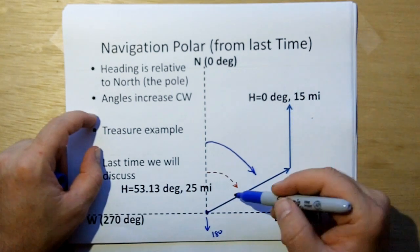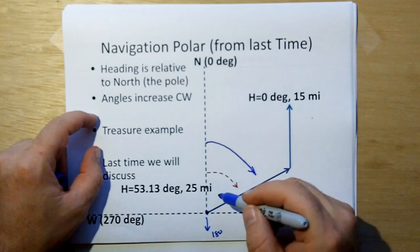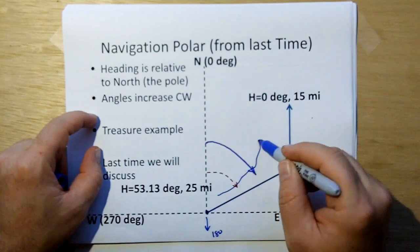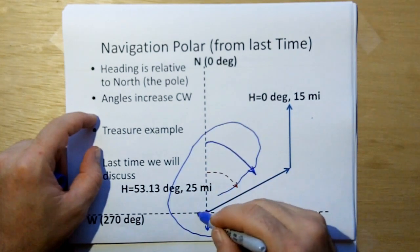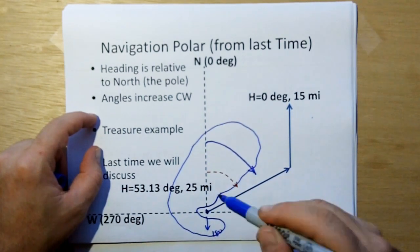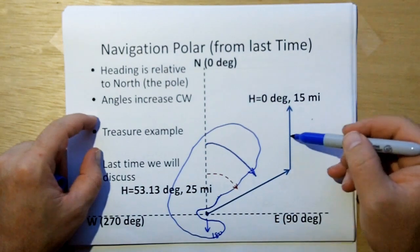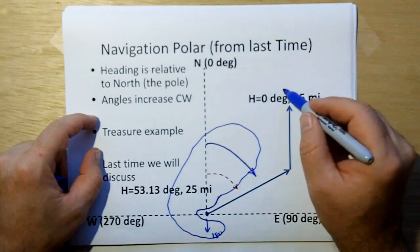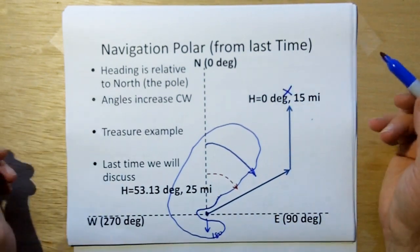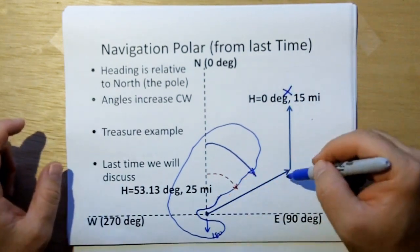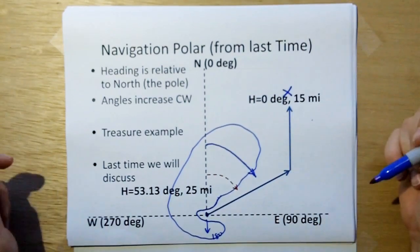Why wouldn't they just take a straight path? Well, it could be that there's an island in the middle — they're in the port of an island and have to get out around the island to get to the place where the treasure is. That would be the reason why they would take a dogleg. That's called a dogleg.